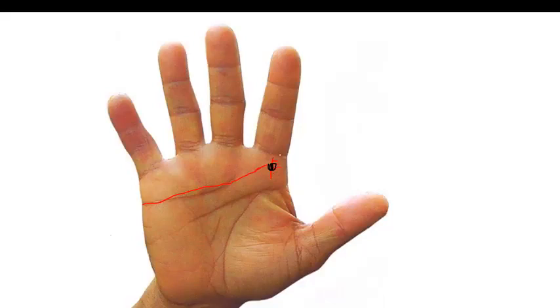But if you have a cross on the Jupiter mount, I already discussed this cross in the love marriage indications video. If you did not watch that, please watch that. If you have a cross on the Jupiter mount, this is one of the most auspicious crosses you will ever find in your palm.